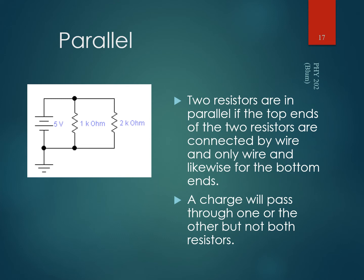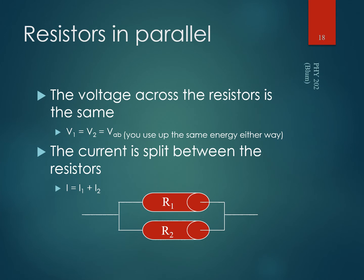Because the wire is perfectly conducting, no voltage is dropped across the wire — all voltage is dropped across the resistors. Therefore the voltage across R1 equals the voltage across R2: V1 = V2. The current, however, is split: the total current I equals I1 plus I2. So resistors in parallel see the same voltage but split the current.